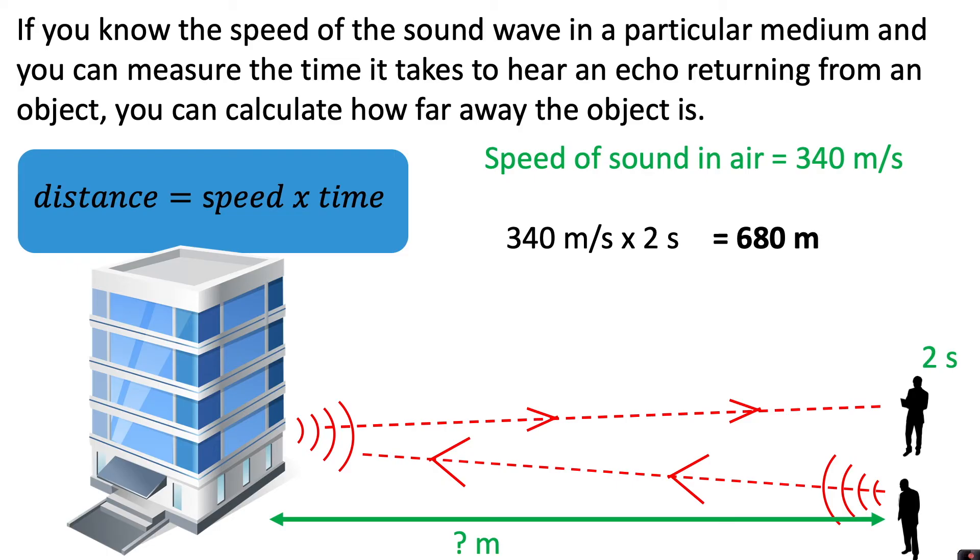But we must remember that's the total distance the sound has traveled. The sound has traveled to the building and back again, so we must halve this when calculating our distance. It wouldn't be 680 meters away—we would need to halve this, and the distance between the people and the building would be 340 meters.